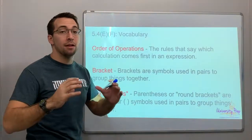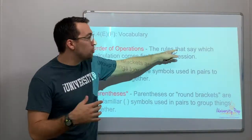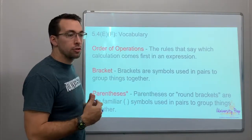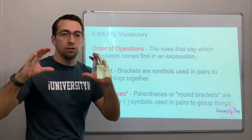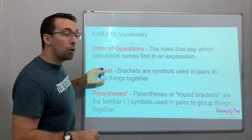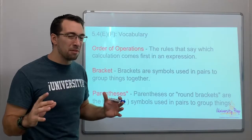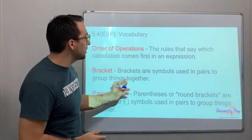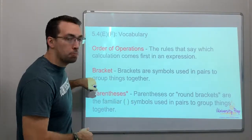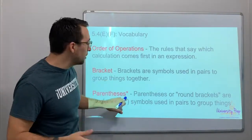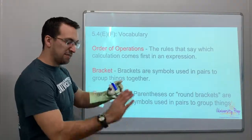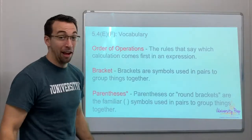Order of operations are the rules that say which calculation comes first — do you multiply first, subtract first, or divide? A bracket or parentheses is the same thing — it's a grouping. Brackets are symbols used in pairs to group things together. Parentheses are just round brackets — that's what they look like.